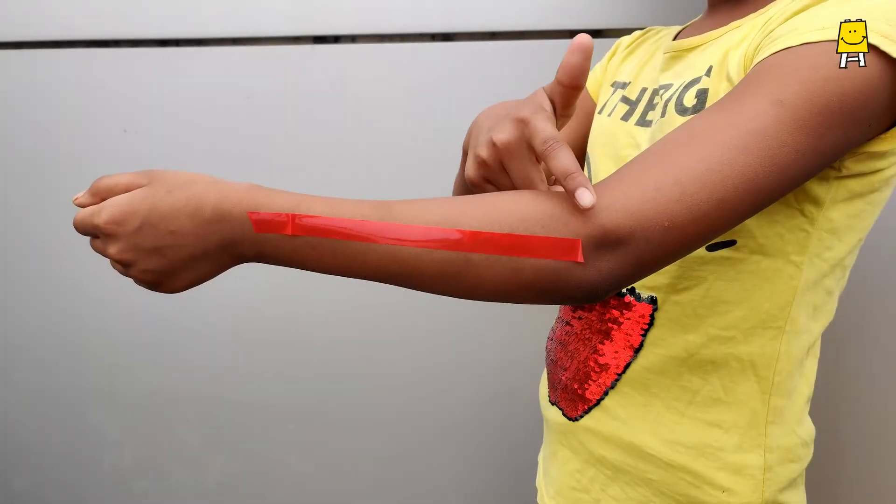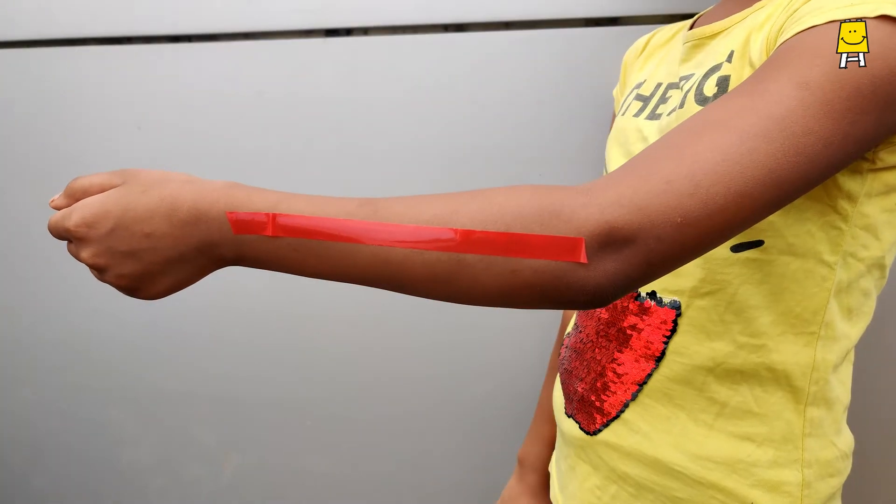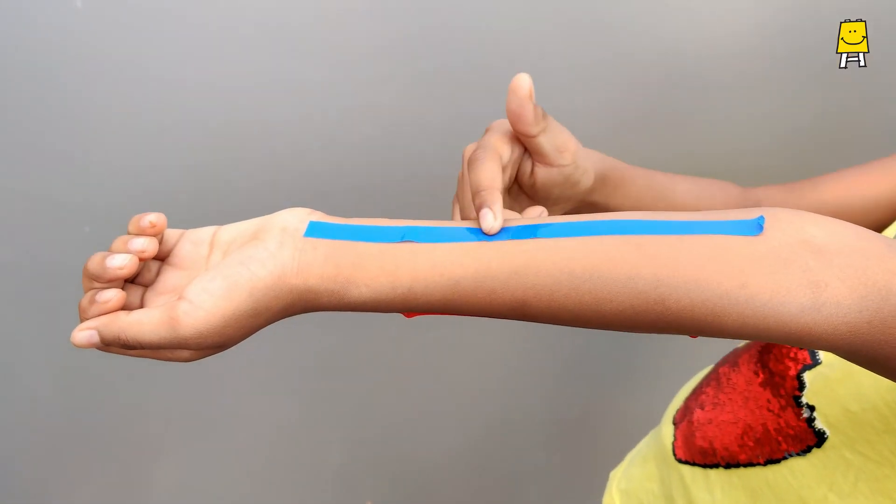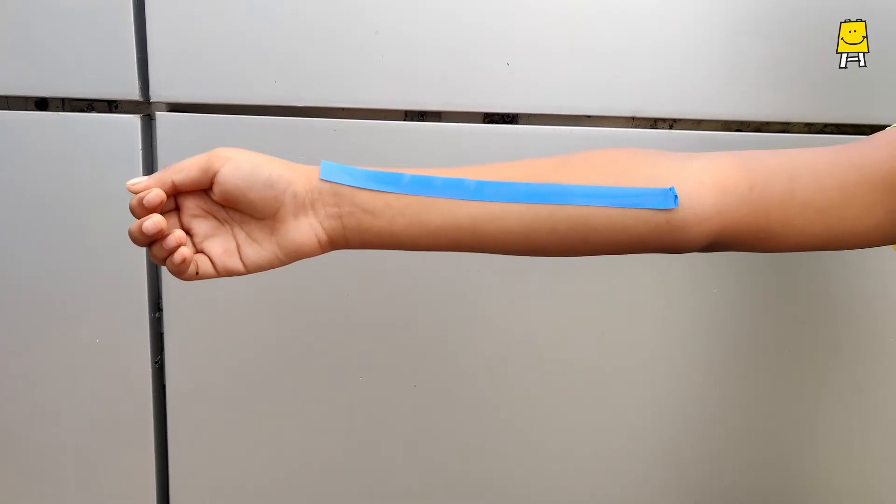Stick a tape on the upper side of your arm and another tape on the lower side. Now, turn your wrist.